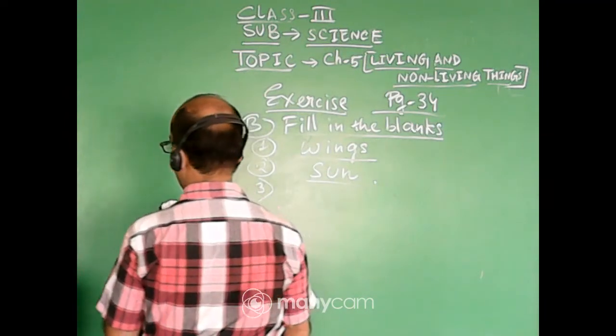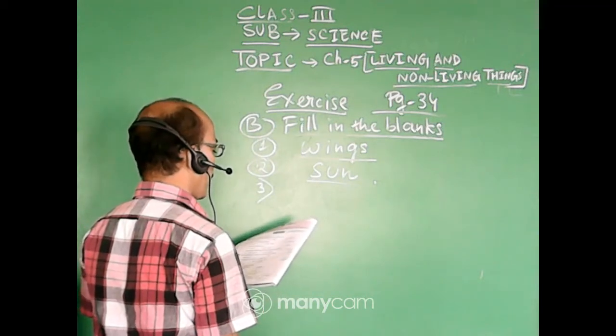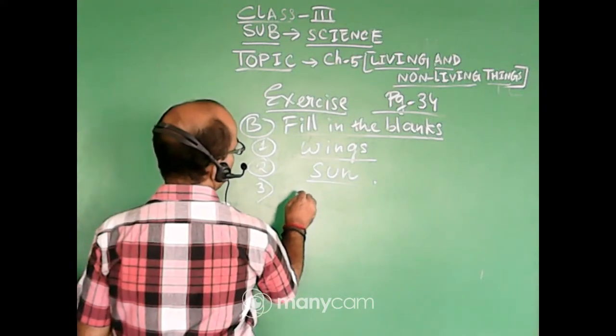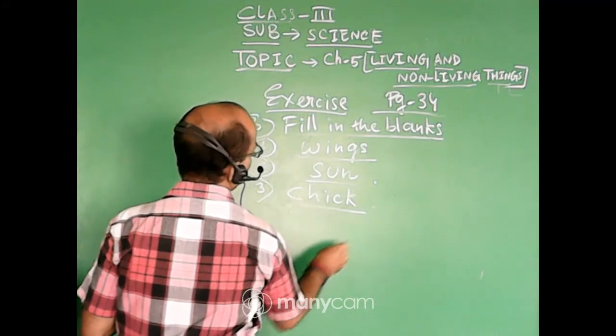Number 3. A dash finally grows into a hen. So answer is chick. A chick finally grows into a hen.